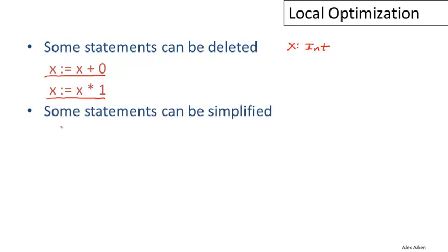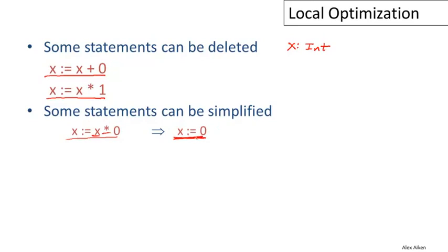Some statements can't be deleted but can be simplified. For example, x equals x times zero can be replaced by the assignment x equals zero. We still have a statement to execute, but this statement may execute more quickly because it doesn't involve running the times operator or referencing the value of x. On many machines that's not necessarily the case, but having an assignment of a constant to a variable will actually enable other optimizations, so this is still a very worthwhile transformation to do.